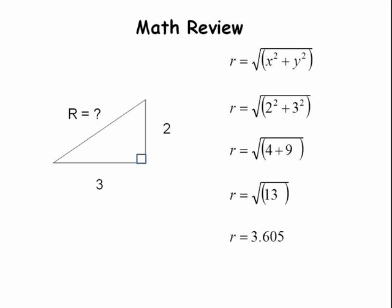For instance, if one side is 2 and the second side is 3 units long, then 2 squared is 4, 3 squared is 9, 9 plus 4 is 13. The hypotenuse, or r, is equal to the square root of 13.